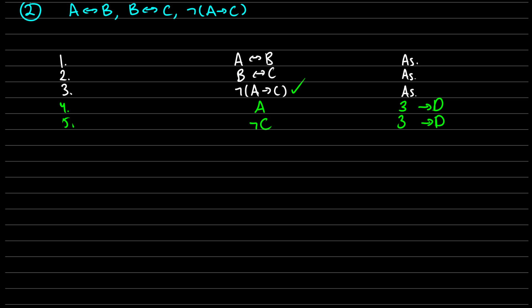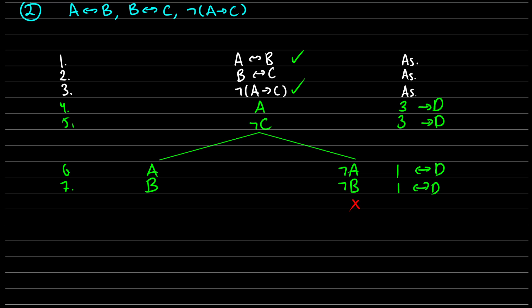Now with the biconditional, we'll have to use some branching paths. Let's deal with line one first — A if and only if B. There are two situations: either A and B are both true, or not A and not B are both true. This will be lines six and seven, coming from line one via biconditional decomposition. On the right branch, we can close it — we have not A and we have A, which is a contradiction. On the left side, we have A, B, and not C, so we continue on the left.